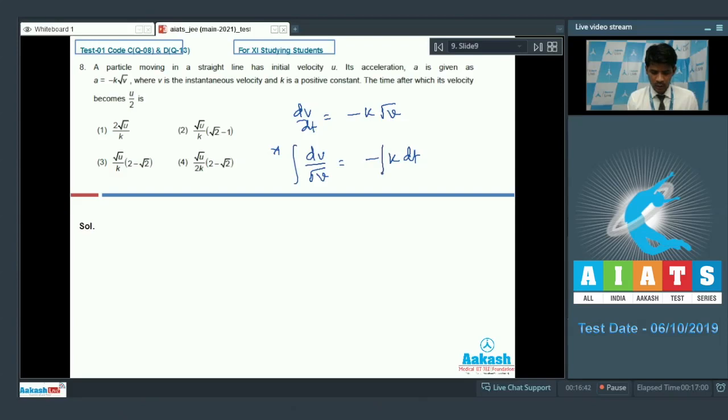Integration of this part will lead us, this dv divided by root v, it will have the integration as 2 root v. Here it is from u to u by 2 must be equal to minus kt. So it is the square root v. So it is the square root of u by 2 minus u would be equal to minus k by 2t, or square root of u. Here it is 1 minus 1 by root 2 would be equal to k by 2t.